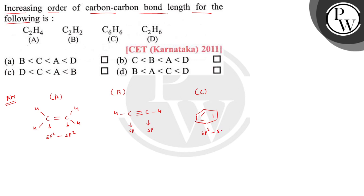In case of D, it is C2H6. So in C2H6, both the carbon atoms are sp3 hybridized, and therefore the overlapping is between sp3 orbitals. It is sp3-sp3 overlapping.